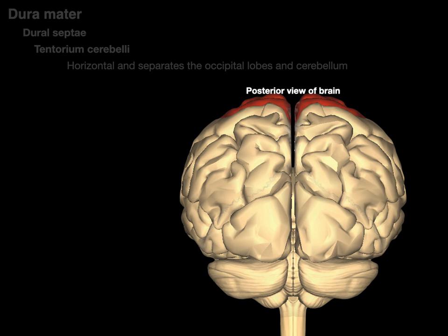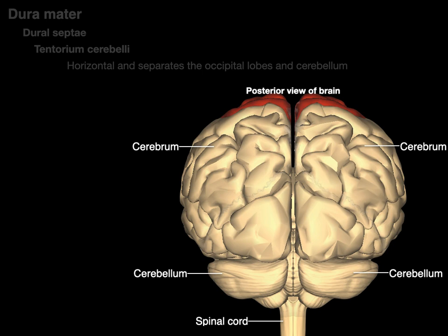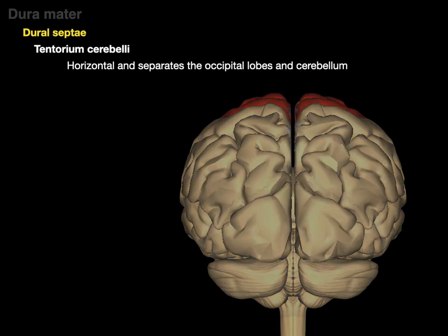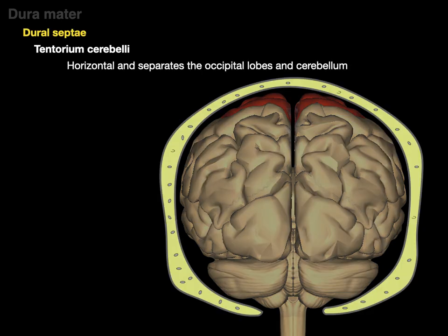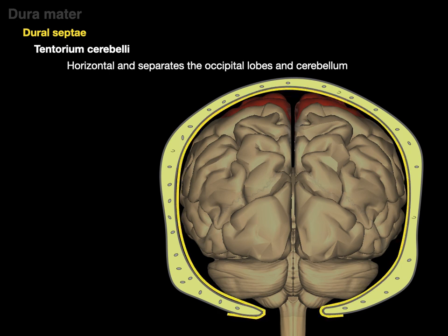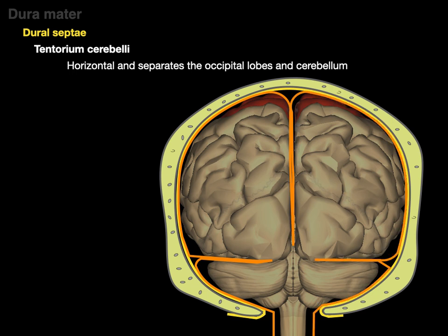Here's a posterior view of the brain showing our two cerebral hemispheres, two cerebellar hemispheres, and the spinal cord. Now we put the skull around it. In yellow is the periosteal layer of the dura mater, and in orange is the meningeal layer. Notice that the periosteal layer fuses at the foramen magnum and the meningeal layer goes all the way down the spinal cord. There is our tentorium cerebelli separating our cerebellum from the occipital lobe, and there's our falx cerebri — falx cerebri is vertical, tentorium cerebelli is horizontal.